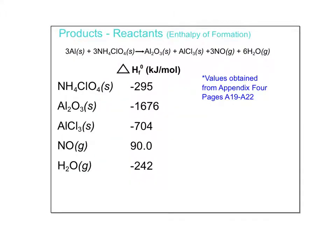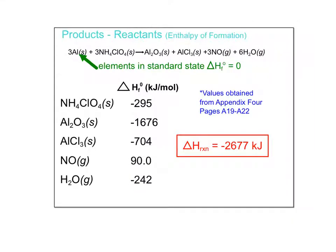Last problem: I would like you to pause this video and try to solve it out. On the next slide I will have the answer for you. Hopefully you remembered that aluminum is a solid at room temperature, so its heat of formation is zero, and you calculated the heat of this reaction as negative 2,677 kilojoules. Hopefully you got it right.